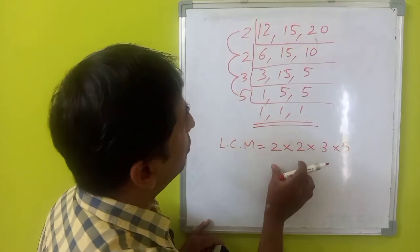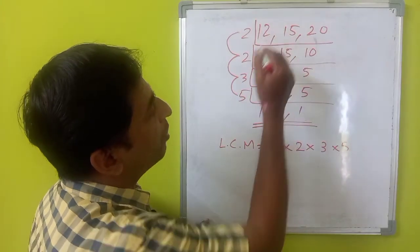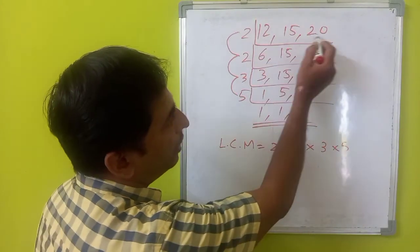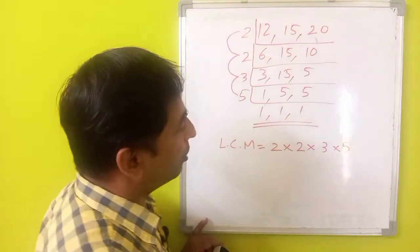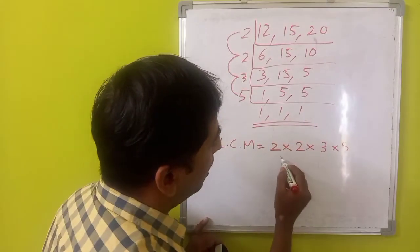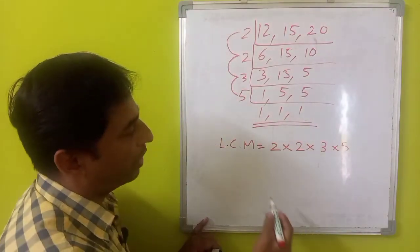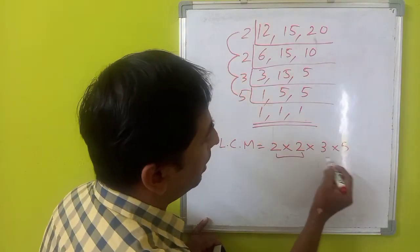Now, we need to ensure that the smallest number which is divisible by each of these numbers and is also a perfect square. So, here, to become a perfect square, this factor should be in pairs.